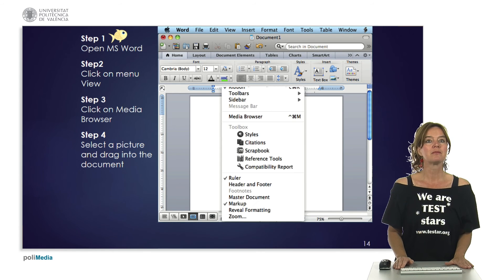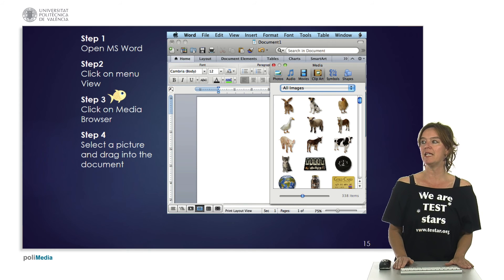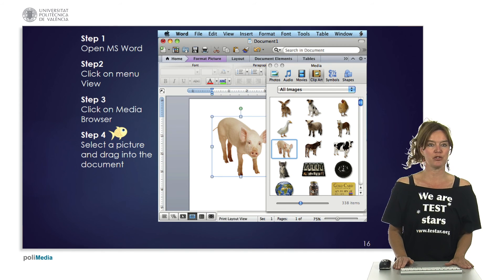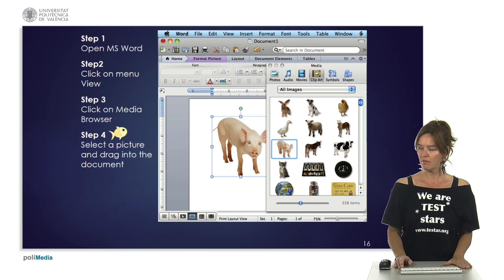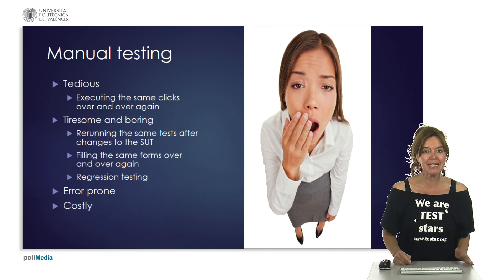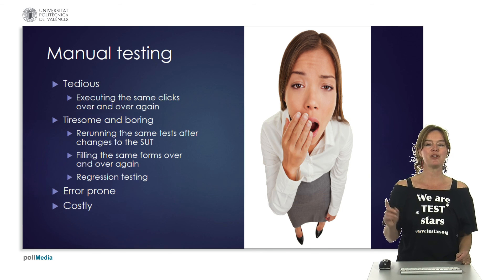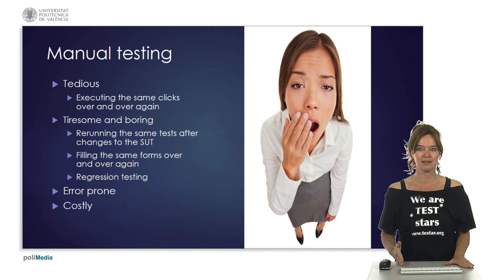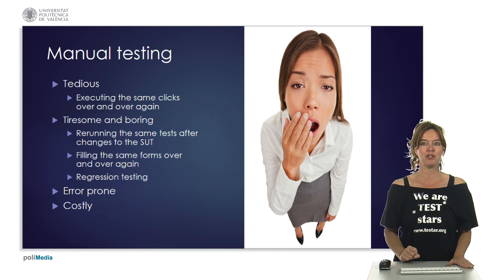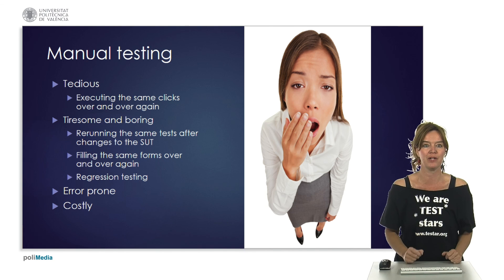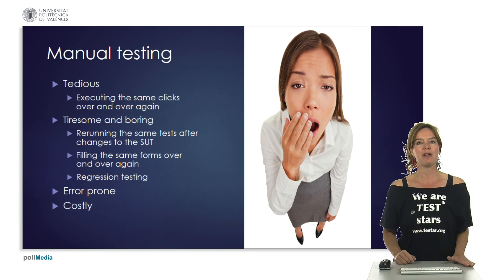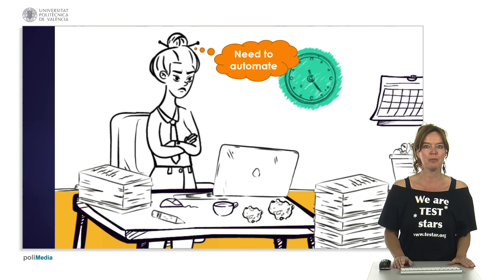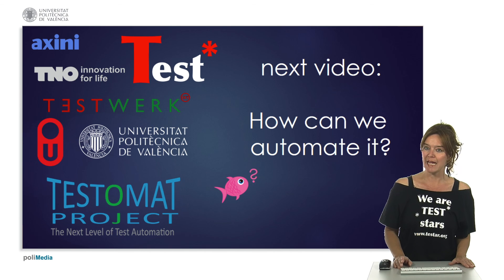So the test sequence looks like this: we open Microsoft Word, click on the menu view, select the media browser, and drag a picture into the document. We apply an oracle at every state and at the end. You can imagine that doing this manually is very tedious because you have to execute the same clicks over and over again. This is tiresome and boring, especially since after every software change we have to rerun these tests — this is called regression testing. If something is tiresome and boring, it becomes error-prone and costly. So we cannot do graphical user interface testing manually; we need to automate it. In the next video we'll talk about ways to automate graphical user interface testing.